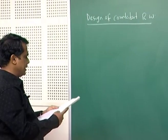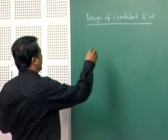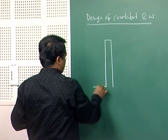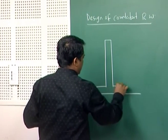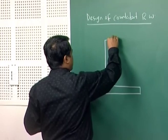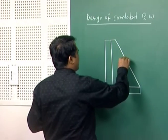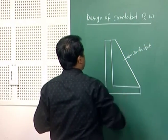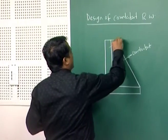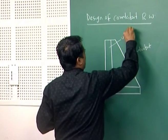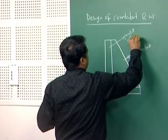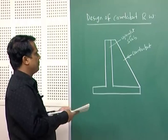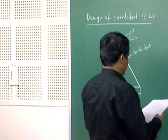Now we are going to design the connection between the counter fort and the upright slab. In this counter fort retaining wall, the counter fort has been connected between your upright slab and heel slab. How this connection has to be made — that design part we left, as well as the drawings.